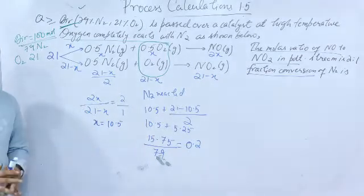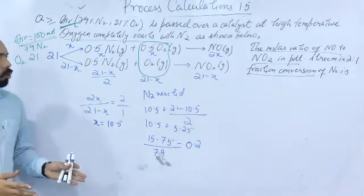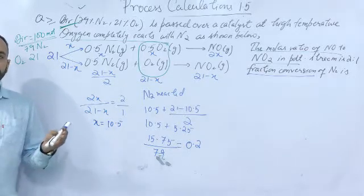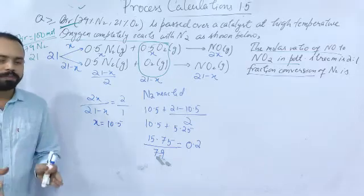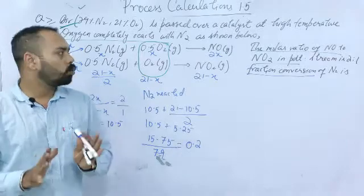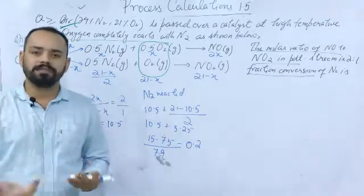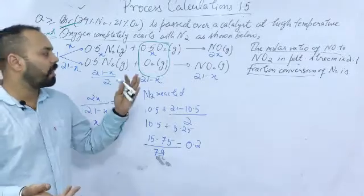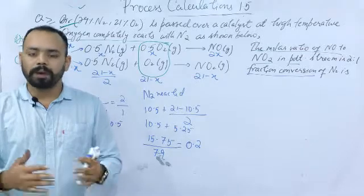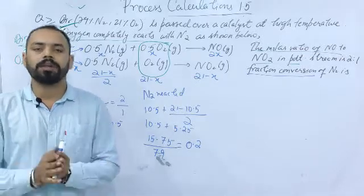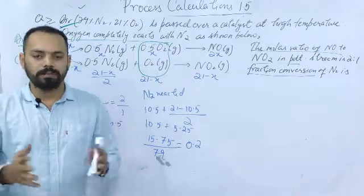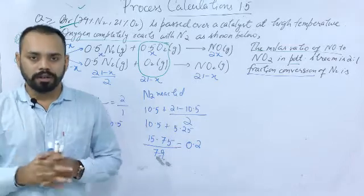That was the second problem using material balance on a single unit with chemical reaction. The first problem also explained how to use percent excess. I hope these two problems help you understand how to solve problems where percent excess is given, where conversion is given, and where side reactions are also taking place. In the upcoming episode, I'm going to discuss recycle and purging — when there is a reactor, a separator, a recycle stream, and a purge stream. Keep following the channel. Thank you.